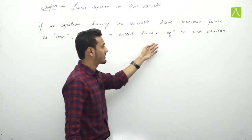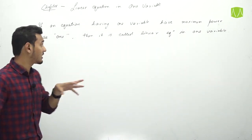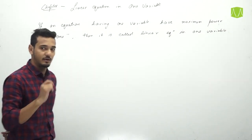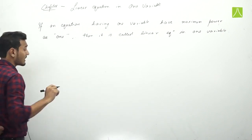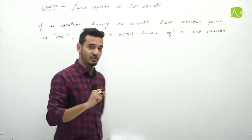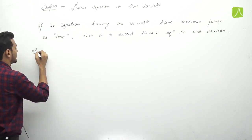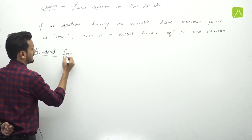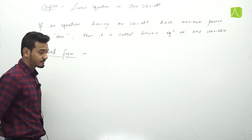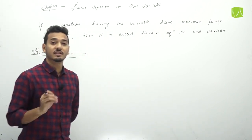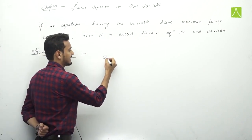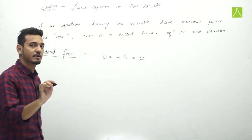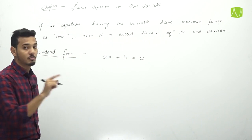So this is the proper definition for linear equation in one variable. Before looking at examples, we will find the standard form of linear equation. How do we denote a linear equation in standard form? Standard form is: ax plus b equals to 0.